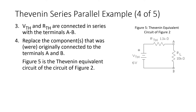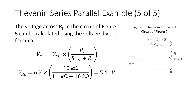Now that we have found VTH and RTH, we connect those two in series with terminals A and B and replace the component originally connected there. The circuit of figure 5 shows the Thevenin equivalent circuit of figure 2 as seen by RL. Using the voltage divider formula — VTH times RL over RTH plus RL — we calculate the voltage across RL to be 5.41 volts.